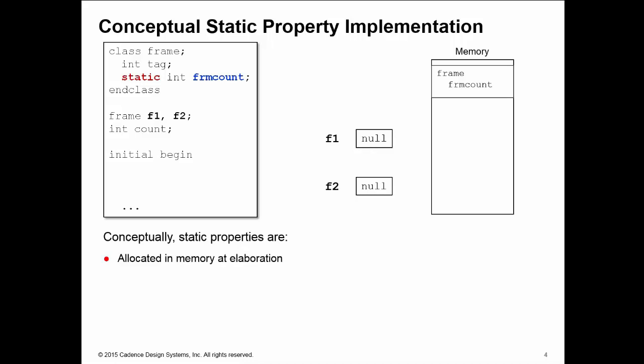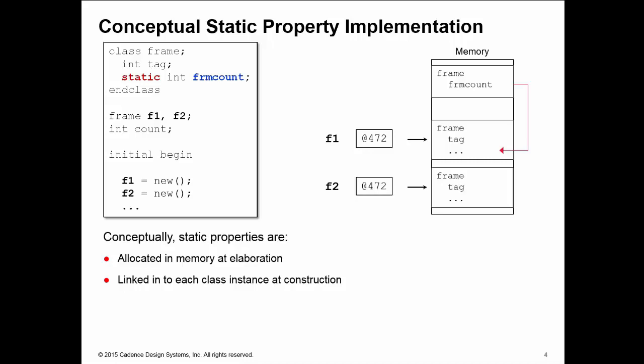And then every time we create a new instance of my frame class, for instance here in handle F1, I create an area of memory for dynamic properties and I link in my single instance of the static property frame count into the F1 instance of frame. And likewise when I create the instance F2 of frame, I create an area of memory for the dynamic tag property and I link in my single copy of the static property frame count to that new instance.